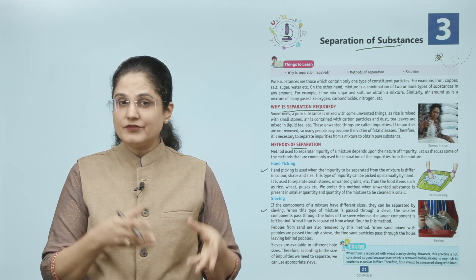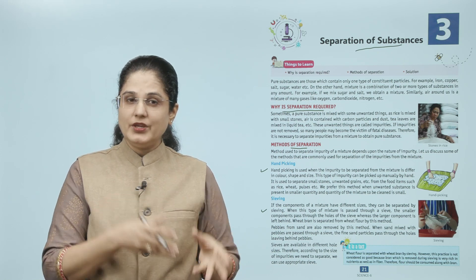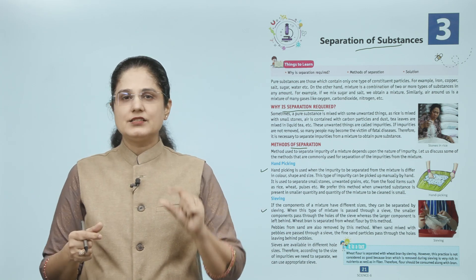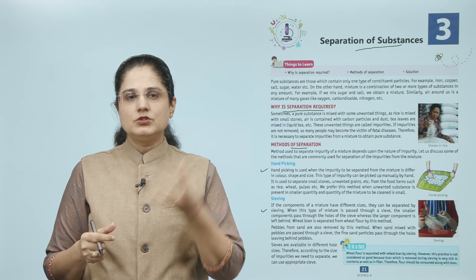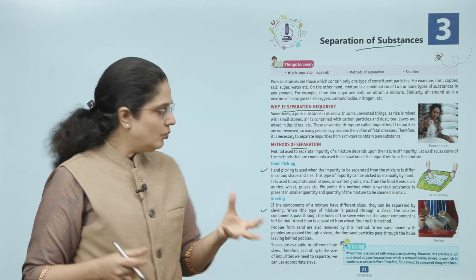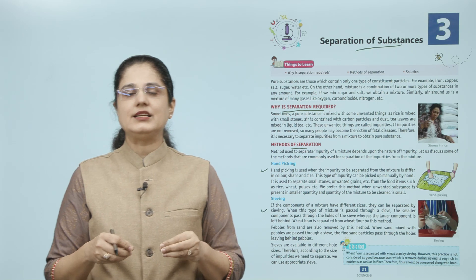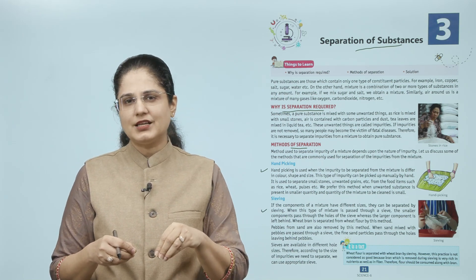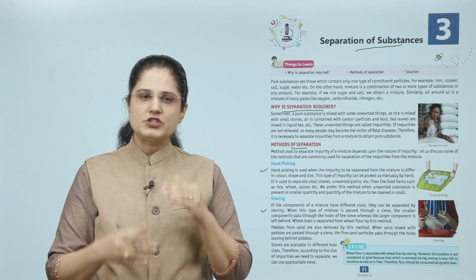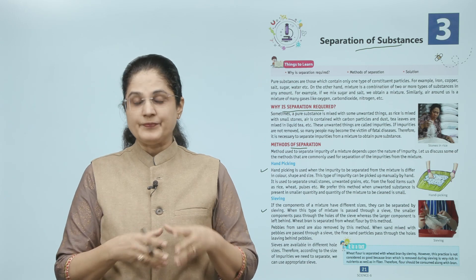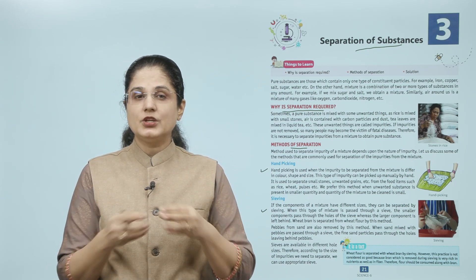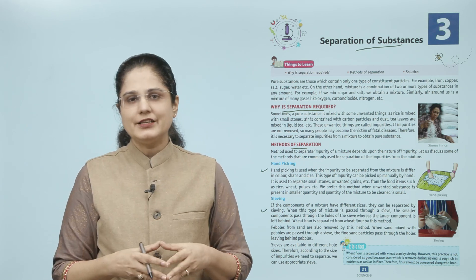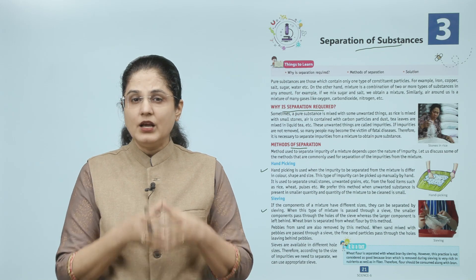Sieves are available in different hole sizes, so according to the size of the impurities we can use appropriate sieves. Is mein jab doh cheezein alag alag sizes ki hain, unhe hum chhalni mein se nikalate hain. Jo chhote size ka component hota hai woh holes mein se pass ho jaata hai, bade size ka peeche reh jaata hai. Alag alag chhalniyaan aati hain jinke holes ke sizes alag hote hain.